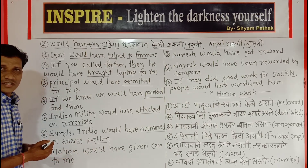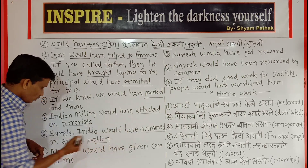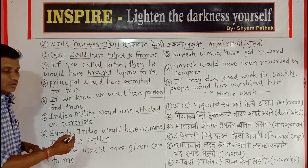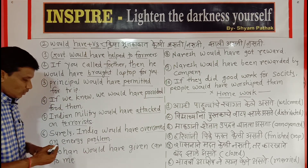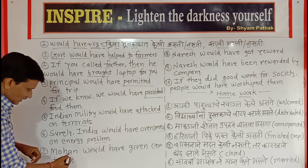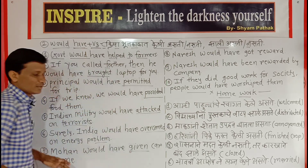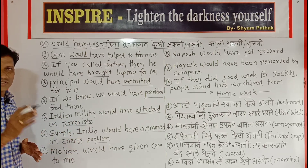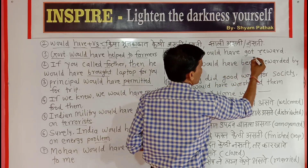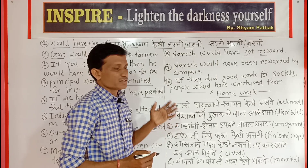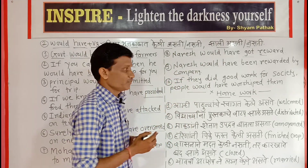Next: 'Surely India would have overcome the energy problem.' Then a negative example: 'They wouldn't have given a car to me.' Note that 'given' is the V3 form here — it is very important to use the correct third form of the verb. Our next sentence: 'Narish would have got reward.' Negative: 'Narish wouldn't have got reward.'